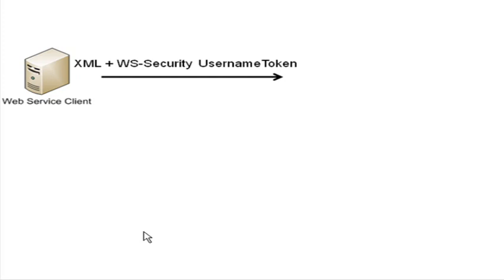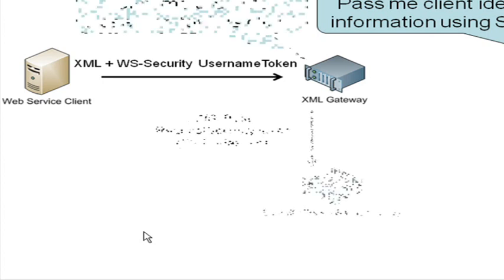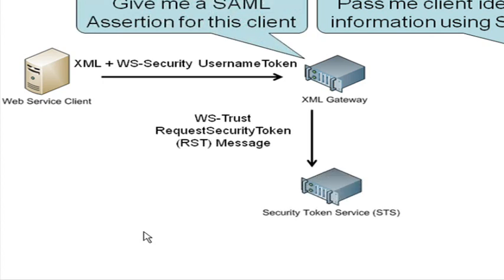In this example, a web service client is attempting to access the web service. It's sending a username token. However, the web service requires identity to be passed to it using SAML. An XML Gateway is used as the intermediary to insert the SAML token. The SAML token comes from a WS-Trust security token service. The SAML token is requested using the WS-Trust RST, request security token message.